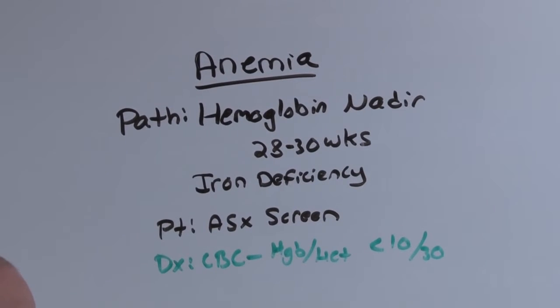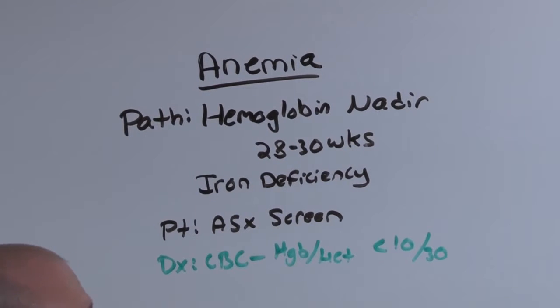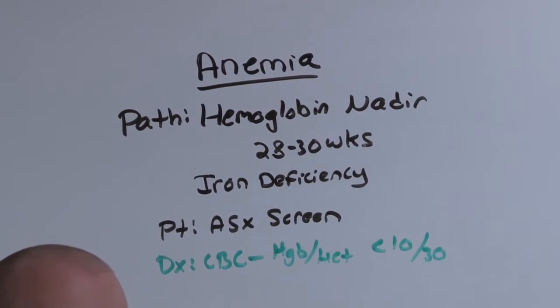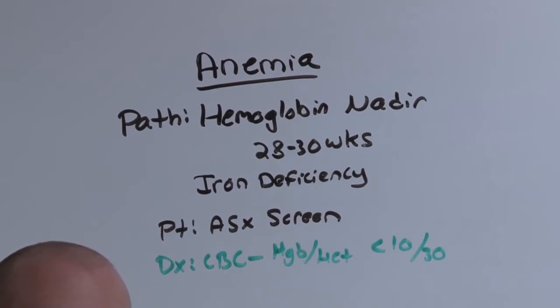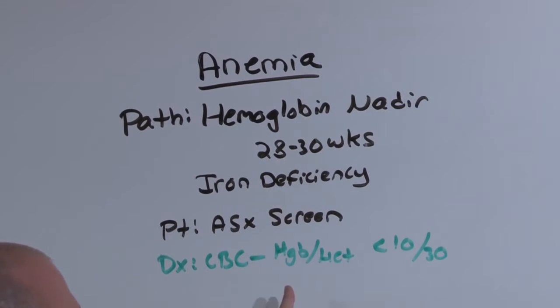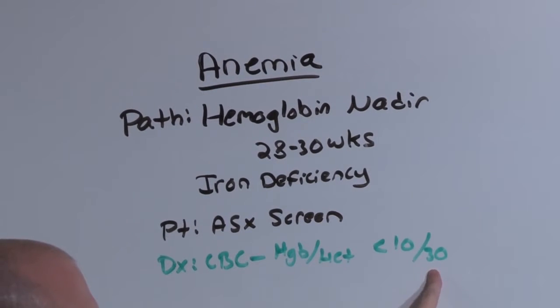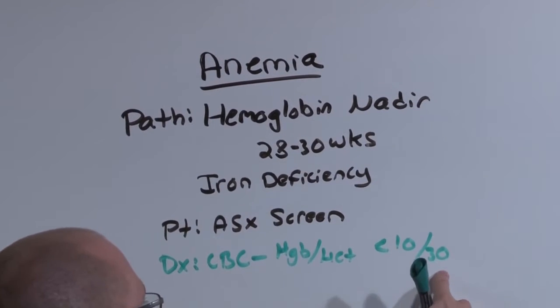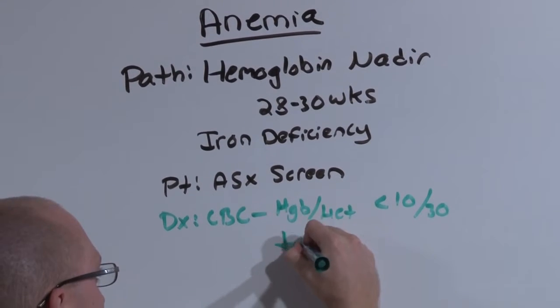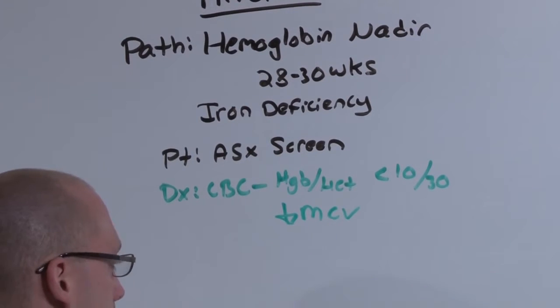If you see a hemoglobin of 10 or 30 in a pregnant female, she is normal. In fact, she has more blood volume than you or I do. And she can tolerate significant blood loss, much more than we can. 500 cc's post vaginal, 1000 cc's post c-section. So, unless the hemoglobin hematocrit is less than 10 over 30, she is not anemic. And if she is less than 10 over 30, you expect to see a decreased mean corpuscular volume.